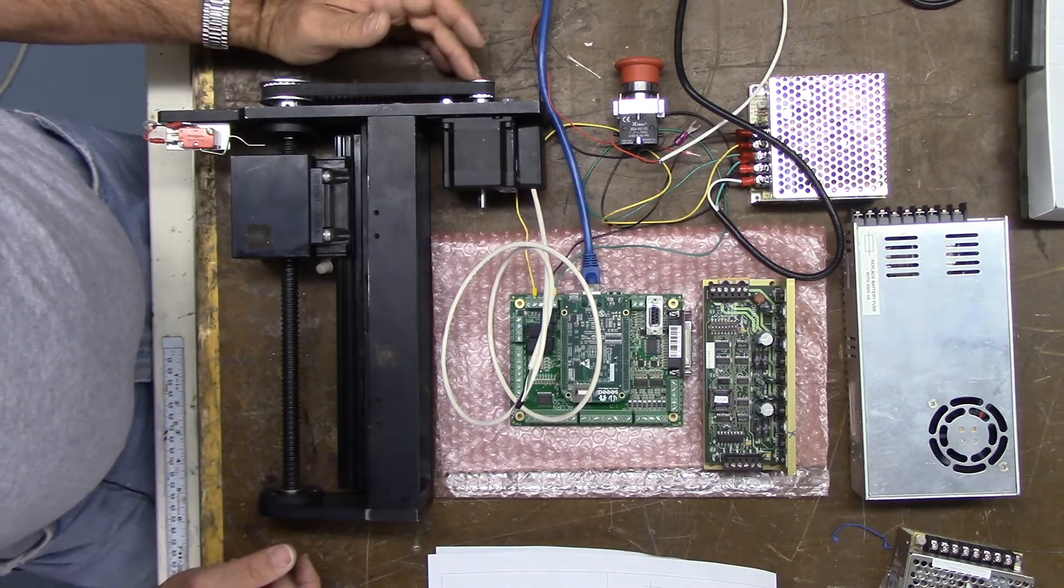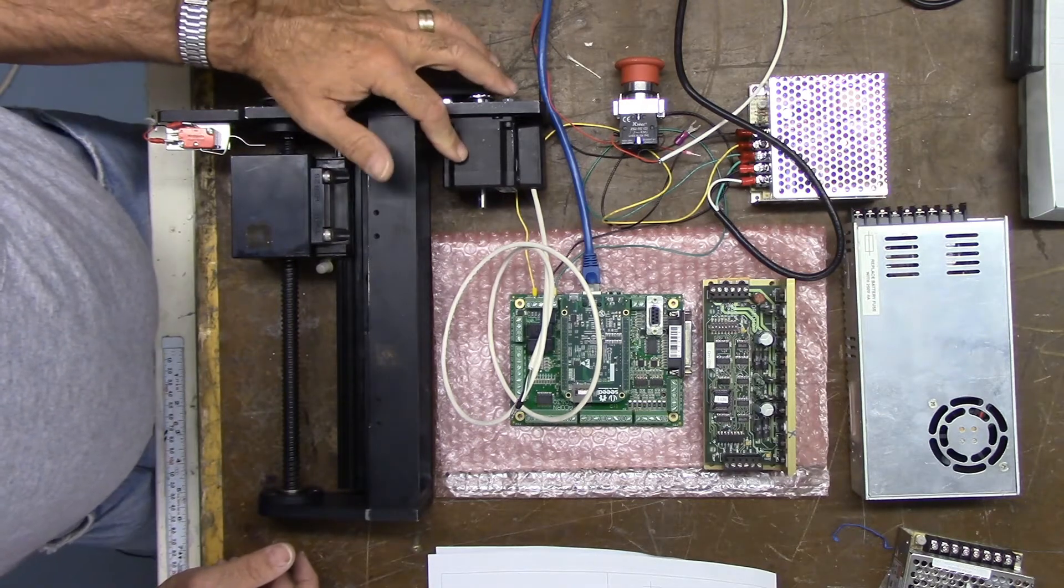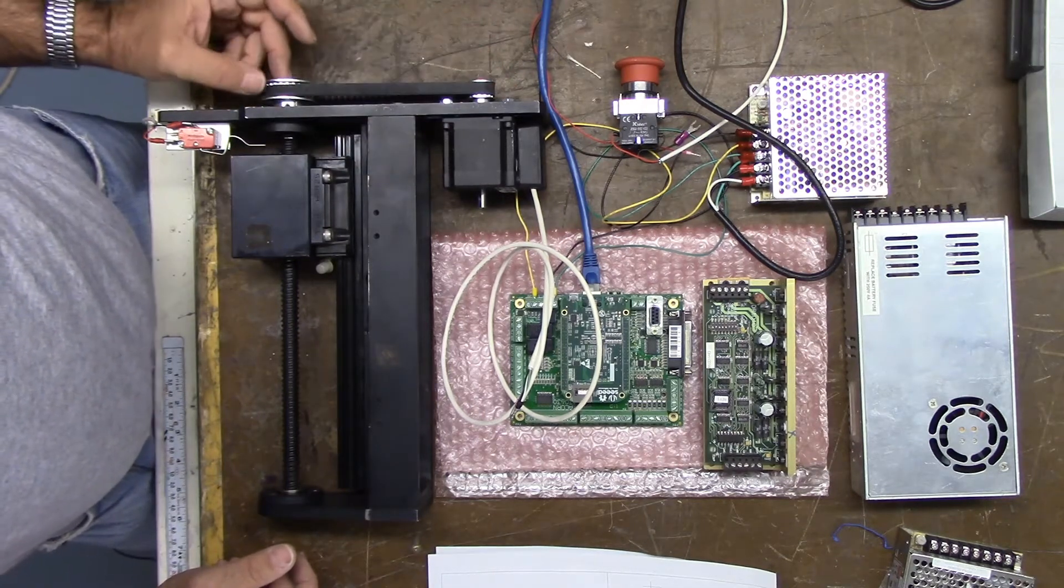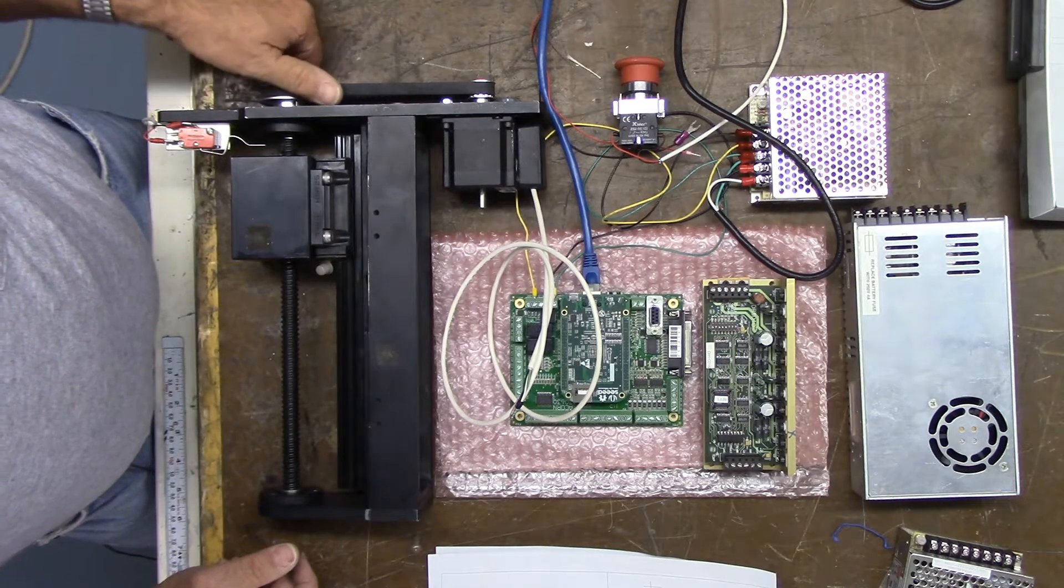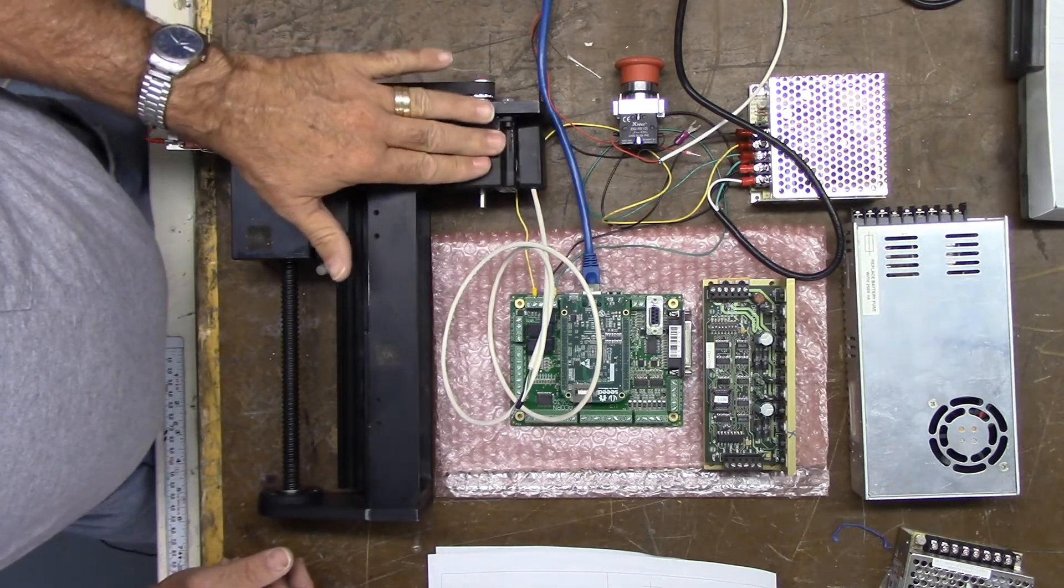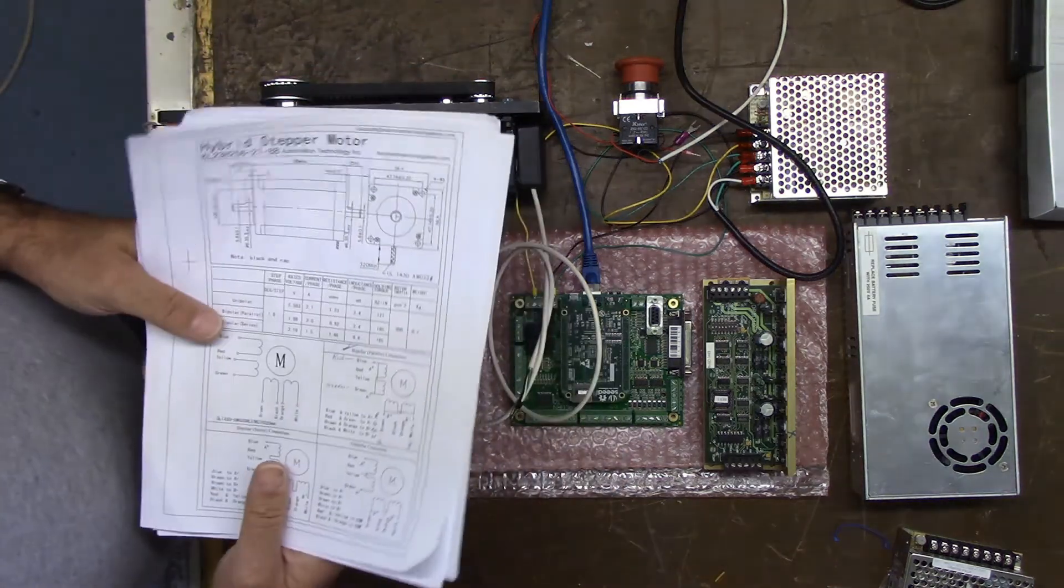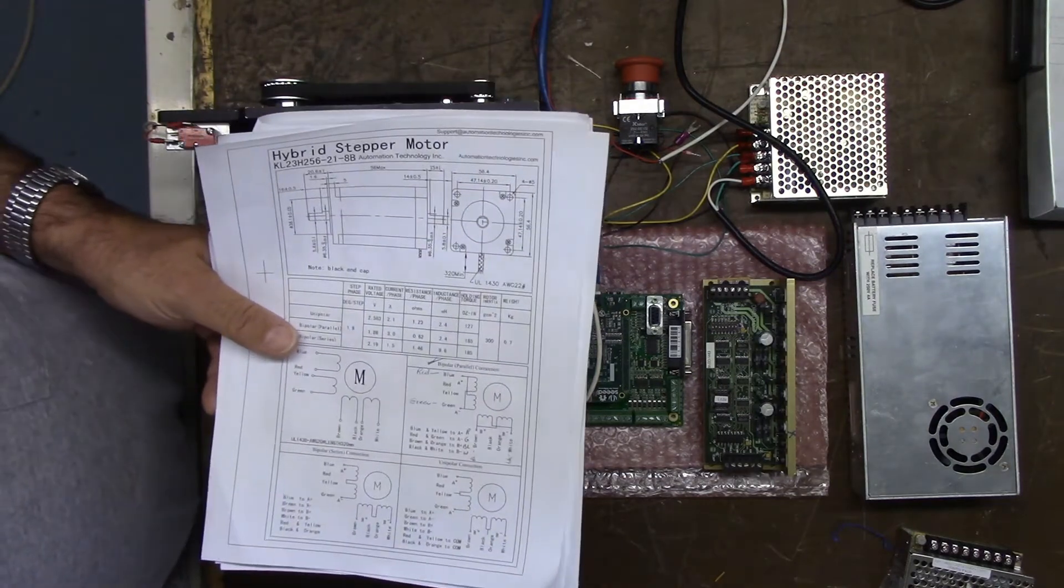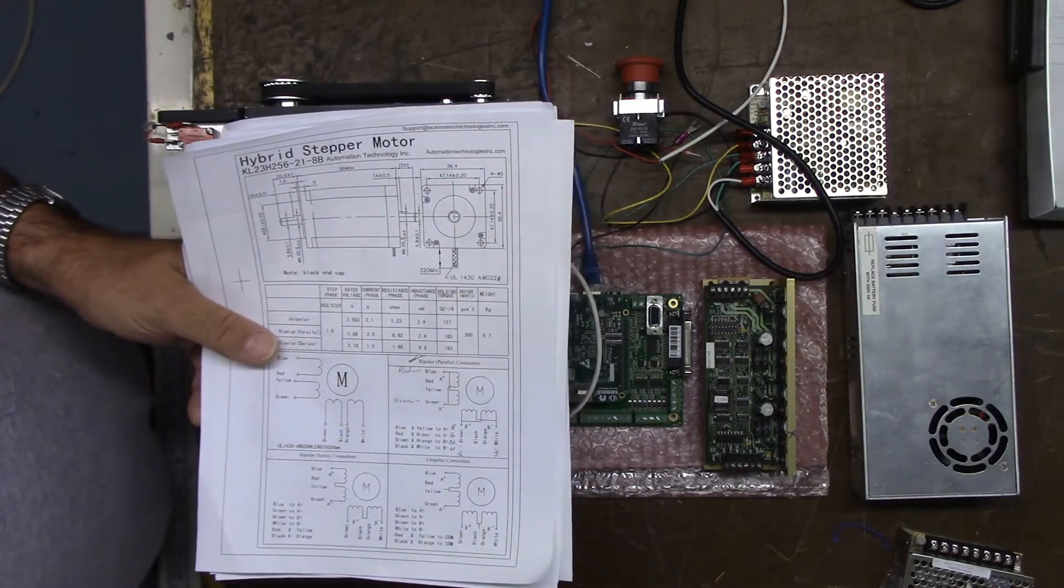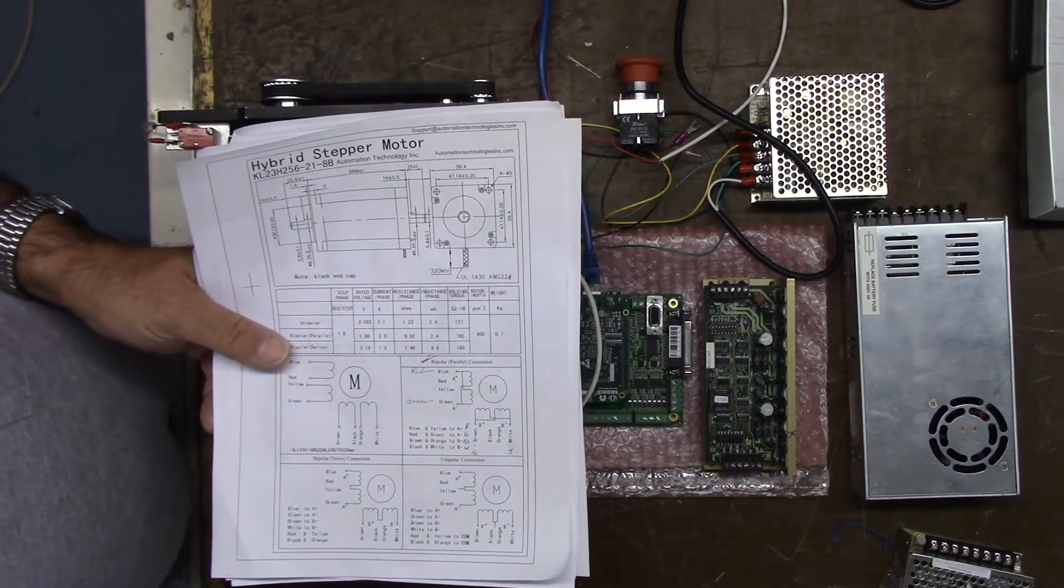And I've got a 12 tooth MXL pulley on the NEMA 23 stepper and a 24 tooth MXL pulley on the ball screw. As I mentioned, it's a NEMA 23 stepper. I have the documentation on the stepper motor. I buy my steppers from Automation Technology. I've had good luck with them. The price is very reasonable and they give really good service.